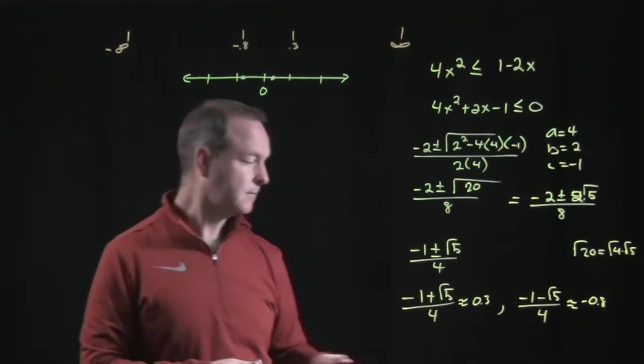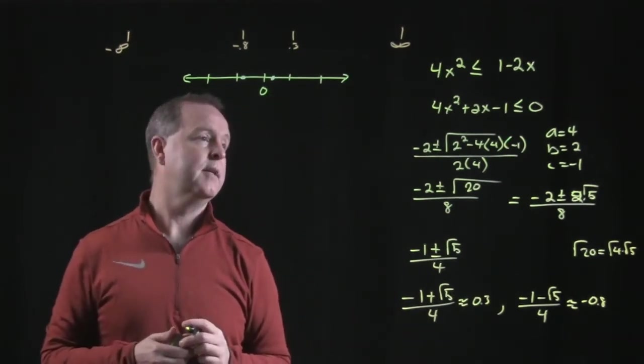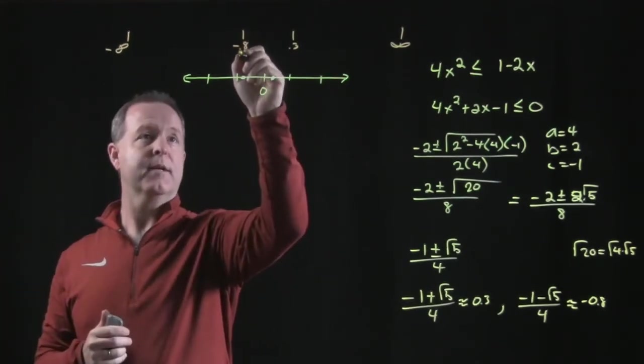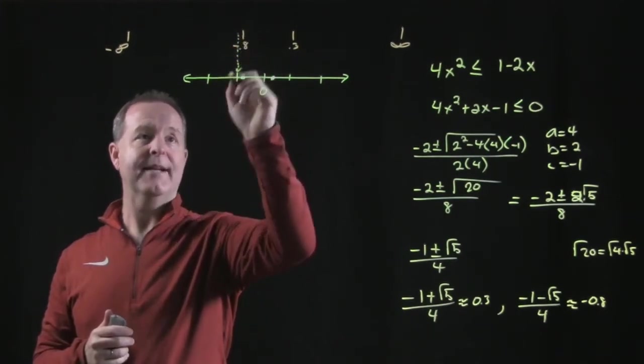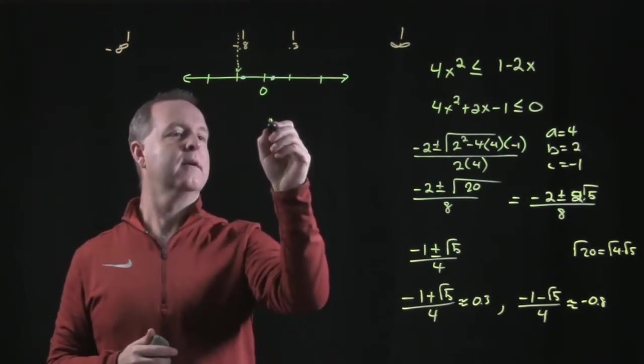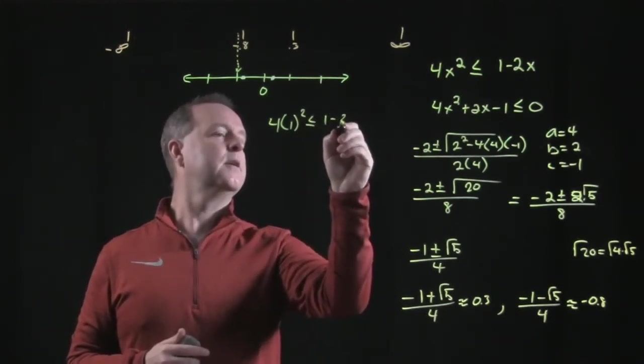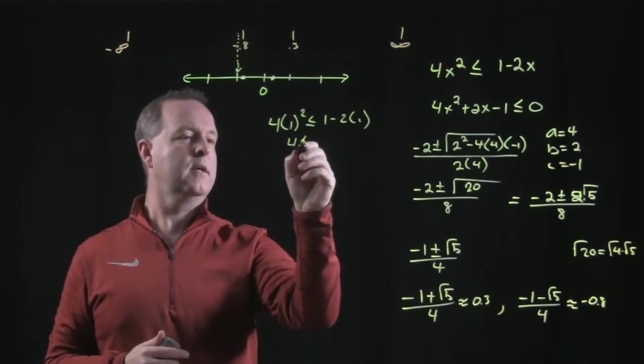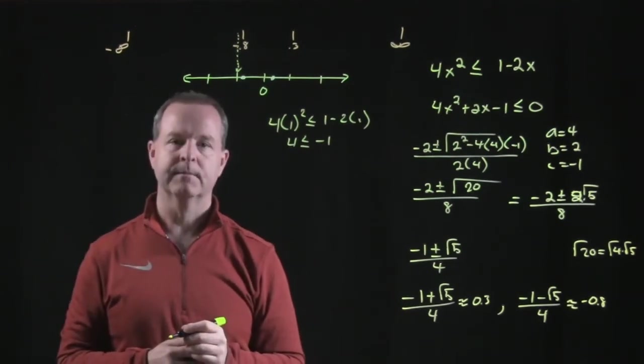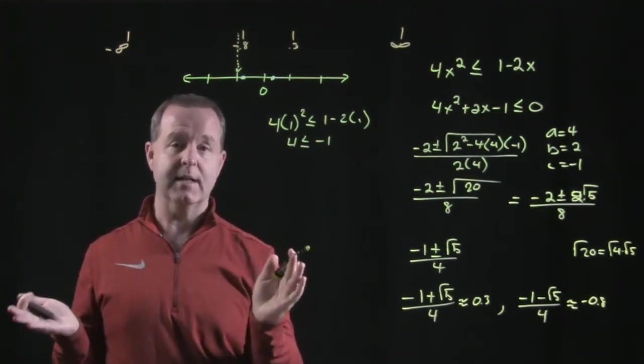I got three sections within this graph. I want to test a test point now in each one to figure out if it's a solution or not. Let's choose some easy points to begin with. One, which is in this section over here. So that will be 4 times 1 squared is less than or equal to 1 minus 2 times 1. 4 is less than or equal to negative 1. Is 4 less than negative 1? No. So that tells me all the points within this section are false. That's not part of my solution.